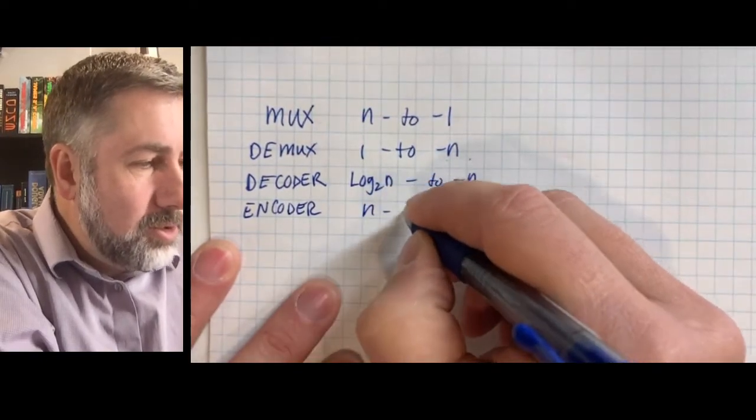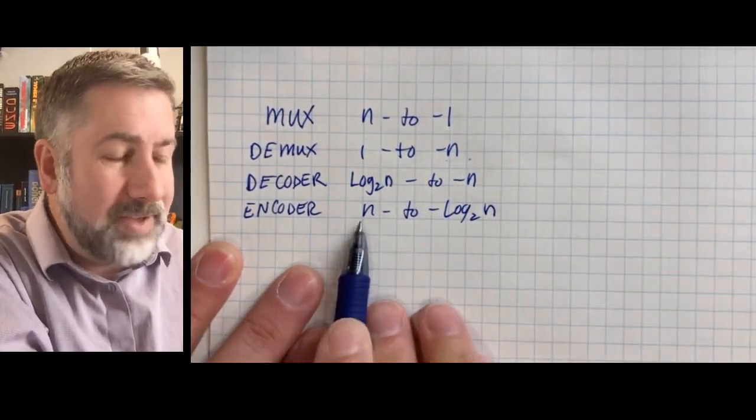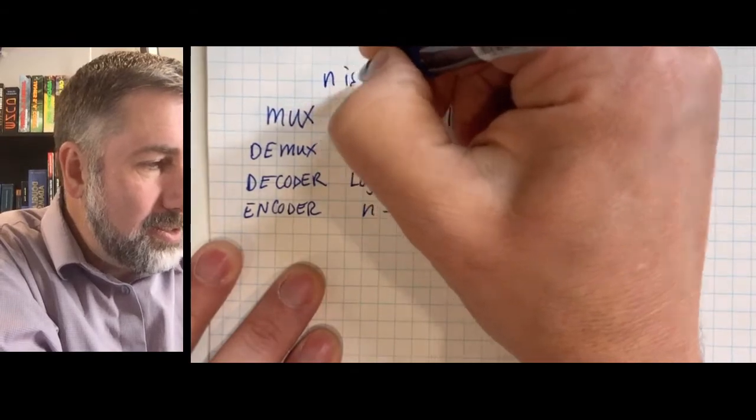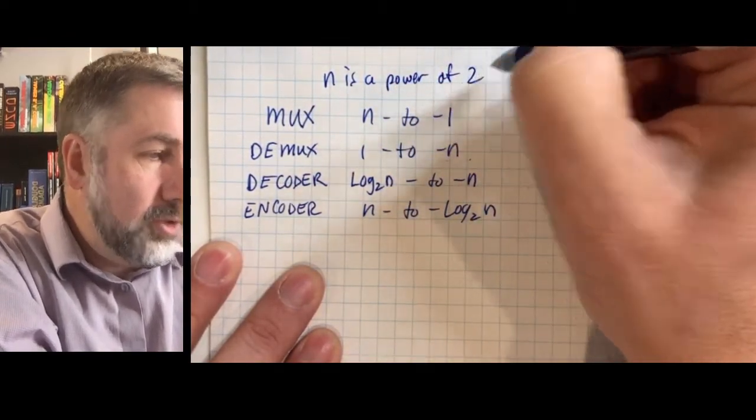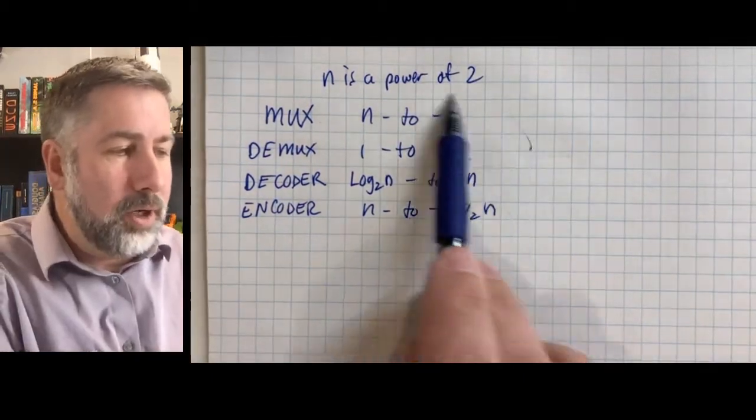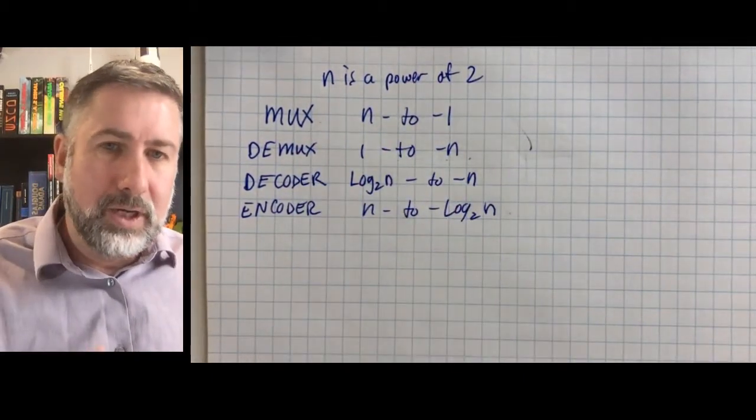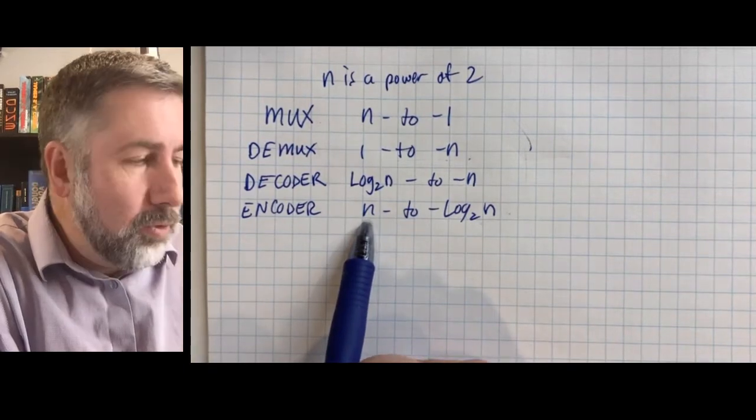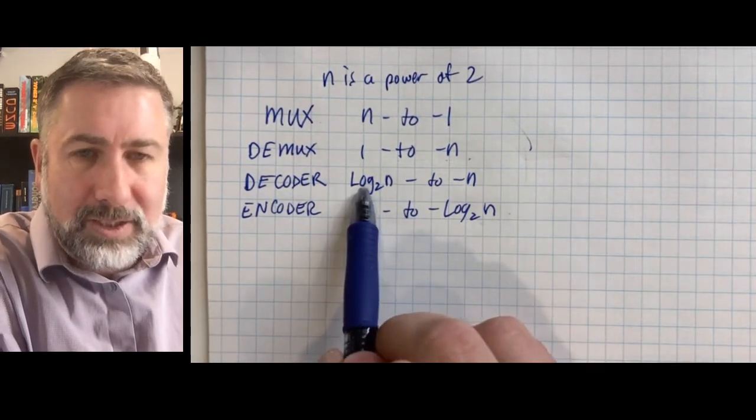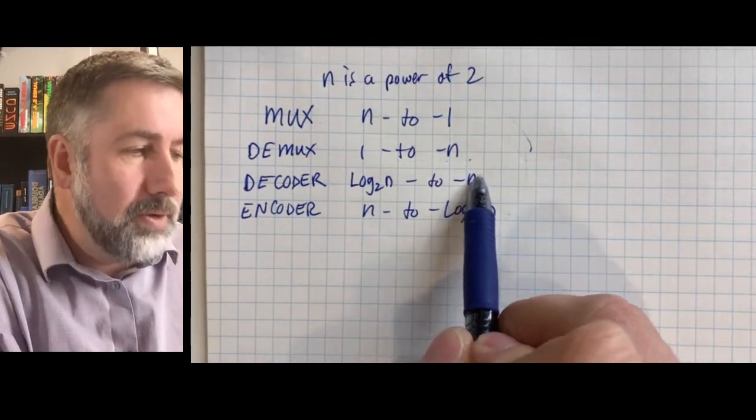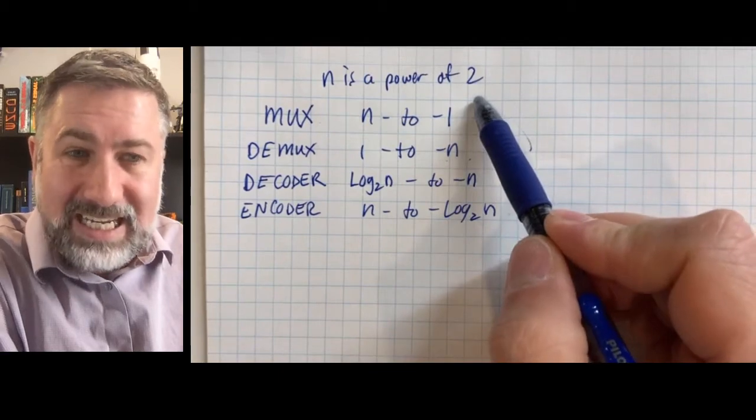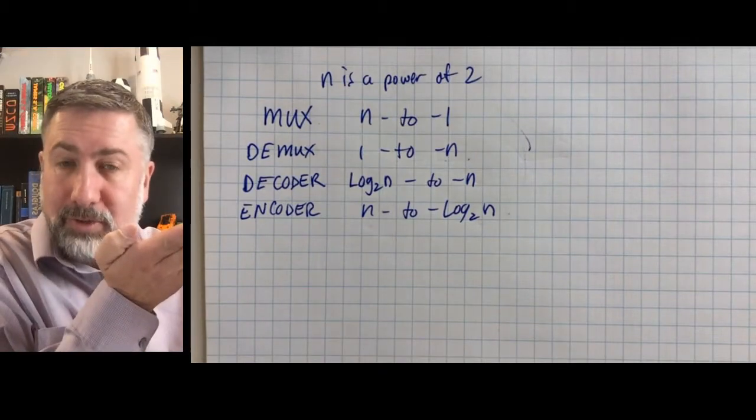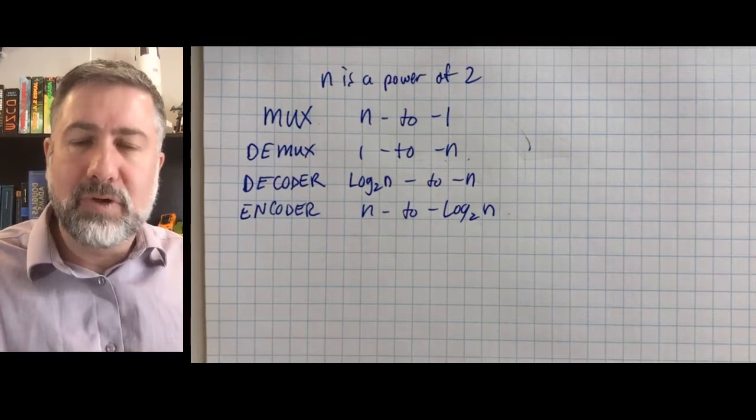If n is a power of 2 this is going to be 4 to 2, and so we need n is power of 2 because each of these corresponds to a set of minterms. And so if you have two inputs, for example two select lines, then you're going to have four minterm lines for the encoder. If you have two lines coming in you're going to have four lines going out for the decoder. The multiplexer and demultiplexer only have one line each because you're routing information from a set of possible inputs down to one for the multiplexer or from one to a set of possible inputs for a demultiplexer.